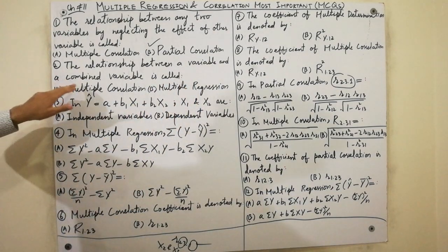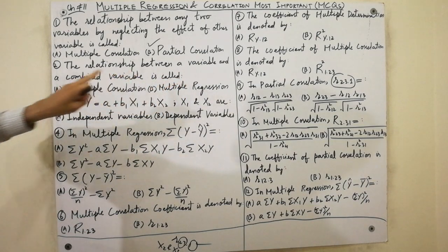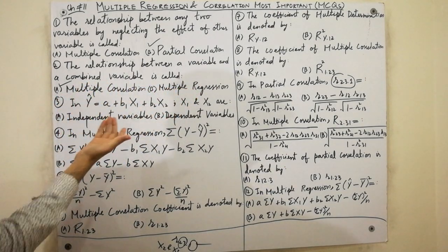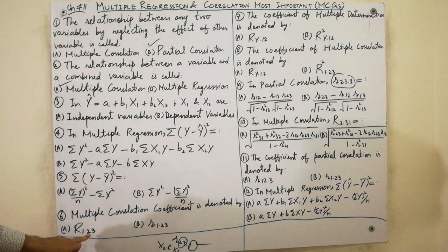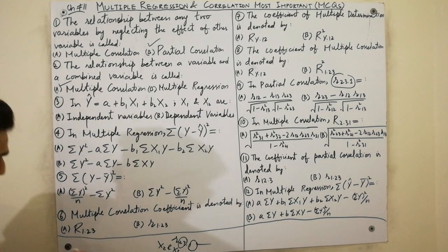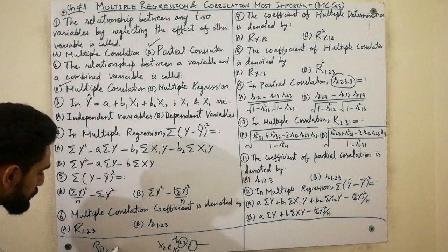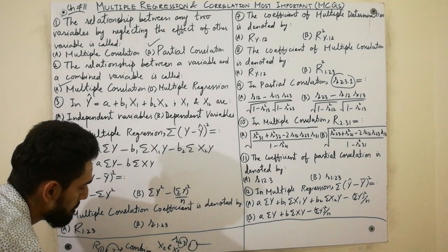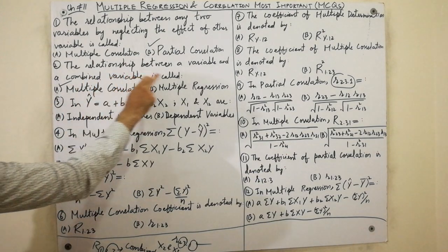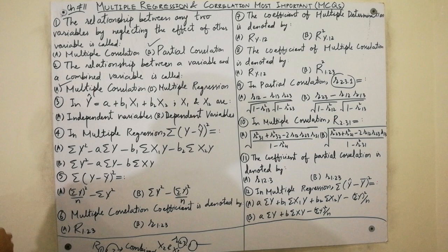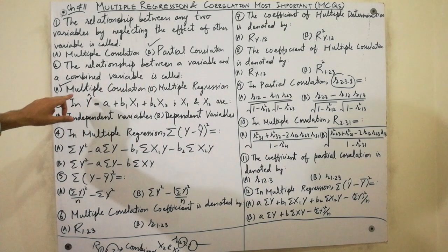Next: the relationship between a variable and a combined variable — what is this called? This is called multiple correlation. The relationship between one variable and combined variables, such as r 1.23, is multiple correlation. The relationship between a variable and a combined variable is called multiple correlation.